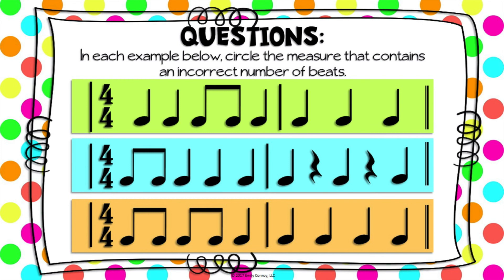If you're still confused or have any questions, feel free to have your parents help you email me. Your assignment for this week is the worksheet that says four-four time signatures. The directions say: each example below contains one measure of rhythms that do not add up to four beats — circle the incorrect measure in each example. It's exactly what we just did with the green, blue, and orange examples. Give that a try, and if you have questions your parents can email me. Have fun with your worksheet and I hope you have a wonderful day!